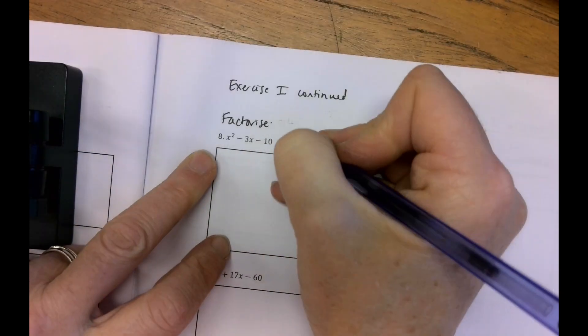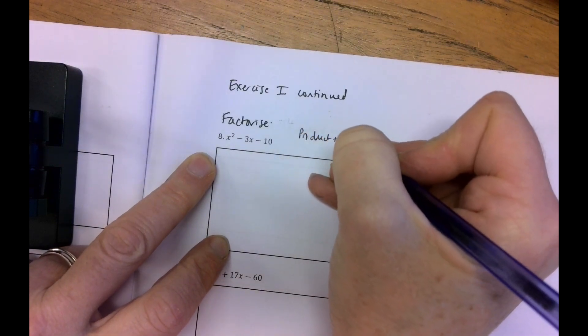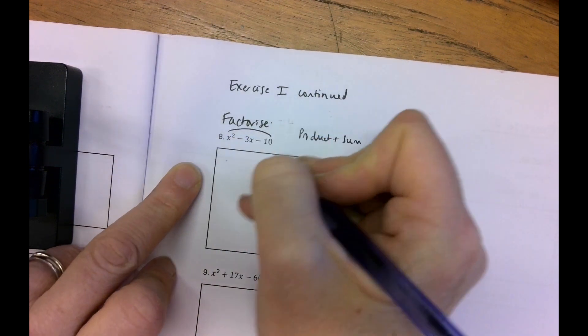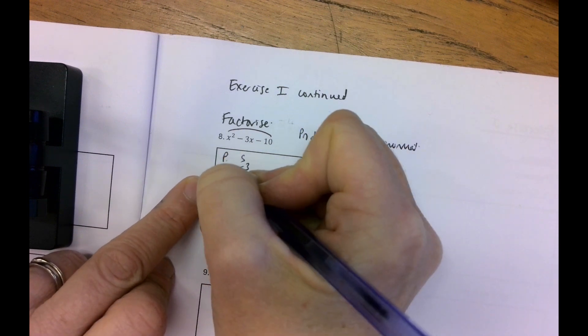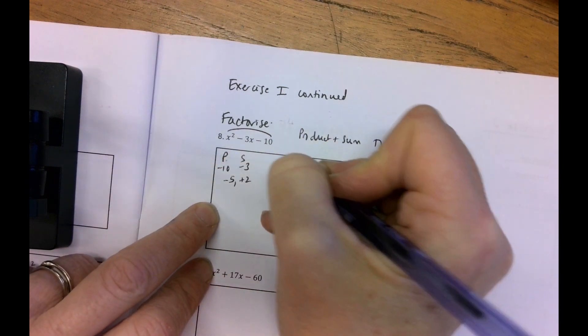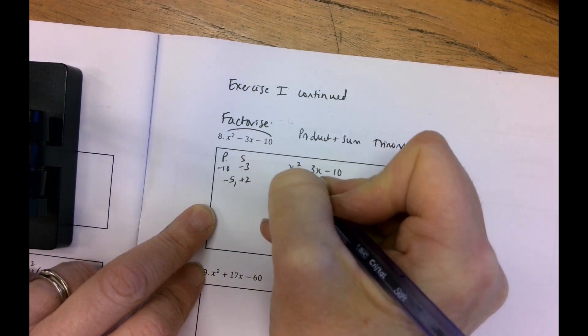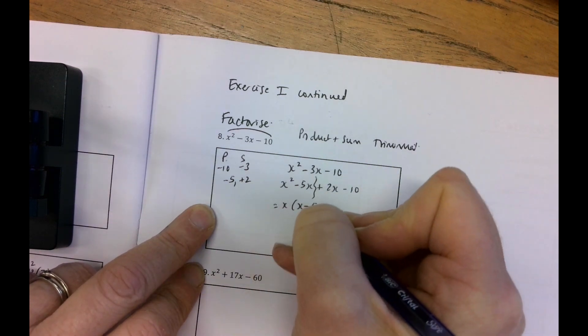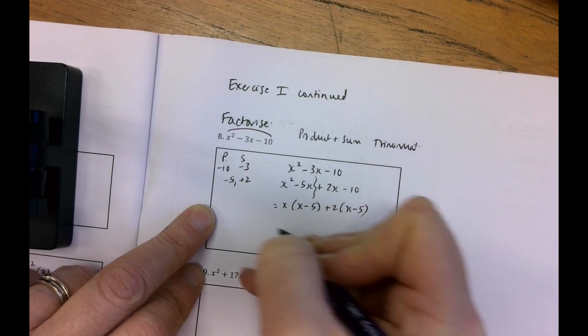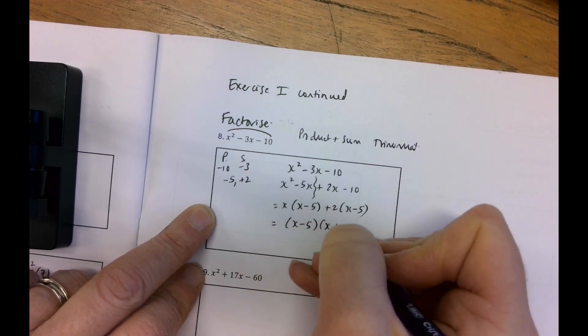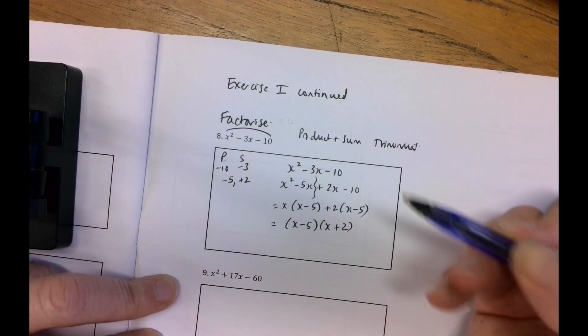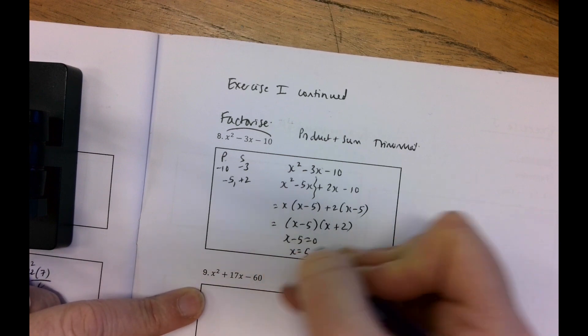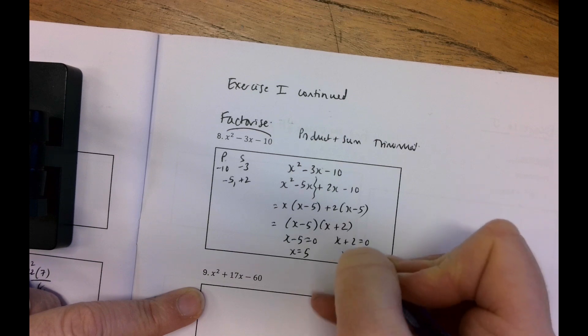And here's another factorize. This one's a product and sum or trinomial. So my product number is minus 10 and my sum is minus 3. So minus 5 and plus 2. So x squared minus 3x minus 10 is equal to x squared minus 5x plus 2x minus 10 which is equal to x by x minus 5 plus 2 by x minus 5 which is x minus 5 by x plus 2. You could of course have gone straight from here to here. I'm just showing you the longer way in case we want to use it later on. So x minus 5 is equal to 0, x equals 5. x plus 2 equals 0, x equals minus 2.